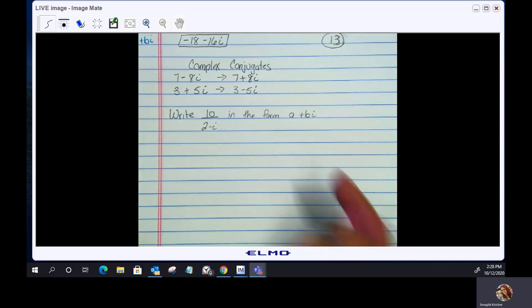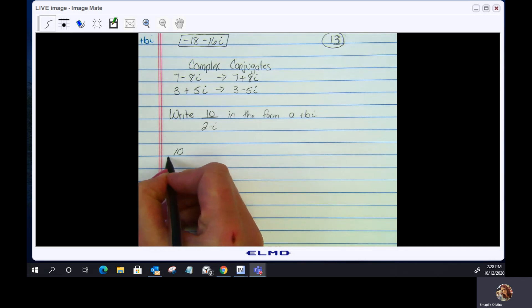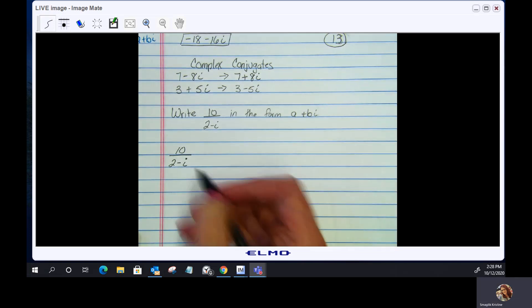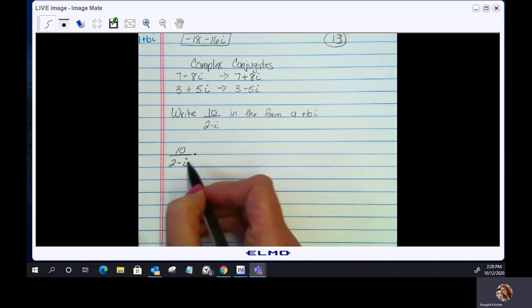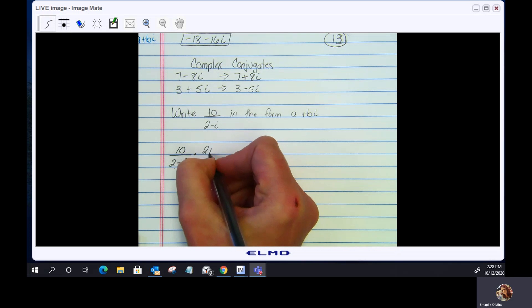Let's get started. I'm going to start with my original 10 divided by 2 minus i. I'm going to multiply the numerator and the denominator by the complex conjugate of my denominator. The complex conjugate of 2 minus i is 2 plus i.